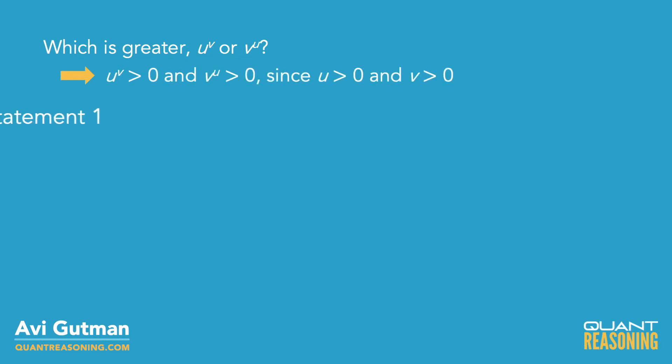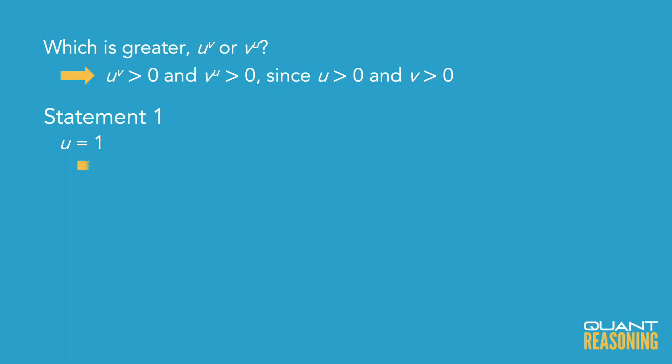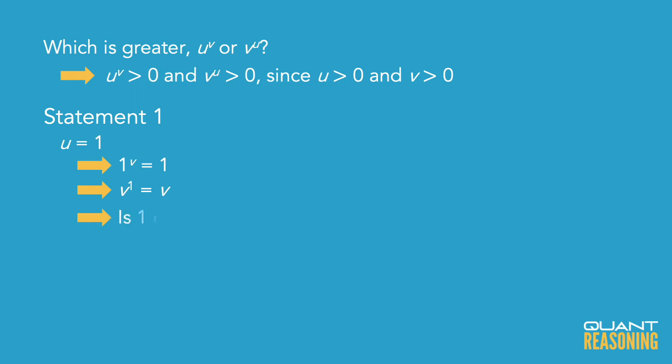Statement 1 seems easier to evaluate because it tells us the value of u, though I'd still wonder what v is. Plugging u = 1 into the expression: u to the power of v becomes 1 to the power of v, which is always 1 regardless of v. But v to the power of u becomes v to the power of 1, which is just v. So now the question is: what's bigger, 1 or v? We don't know.